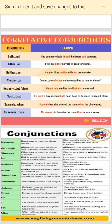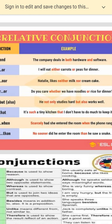Now I have some more examples for you. Suppose the company deals in both hardware and software — 'and' is the conjunction here. Second one: I will eat either carrots or peas. So 'either' is again a conjunction. Next one: I will drink neither milk nor cake — 'neither' and 'nor' are both conjunctions. Then: do you care whether we have noodles or rice? 'Whether' and 'or' are again conjunctions.